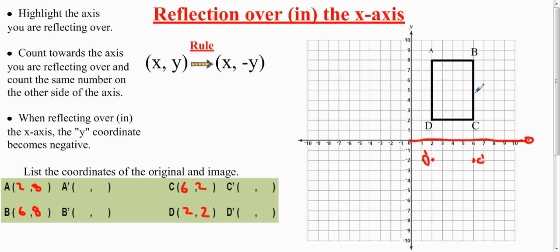B is 8 away. 1, 2, 3, 4, 5, 6, 7, 8 away. That means B' has to be 8 away. 3, 4, 5, 6, 7, 8. You can put B'.